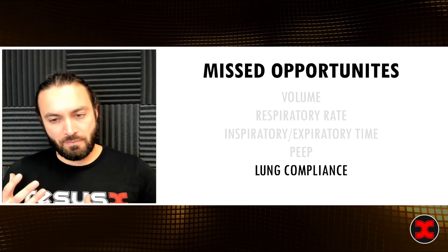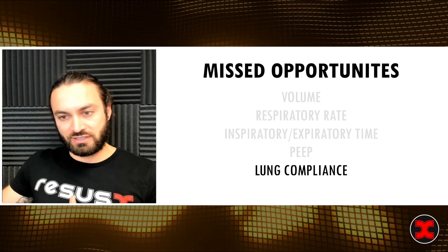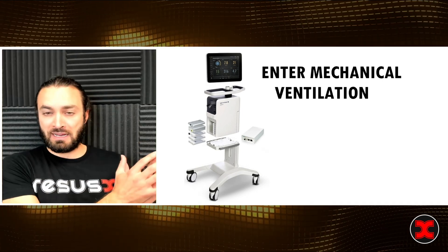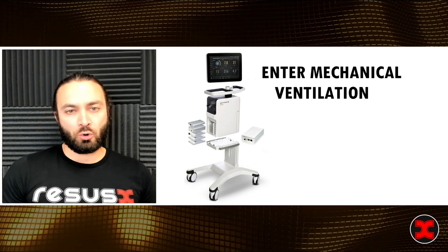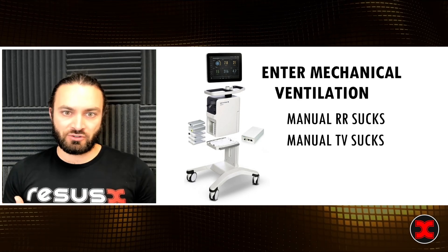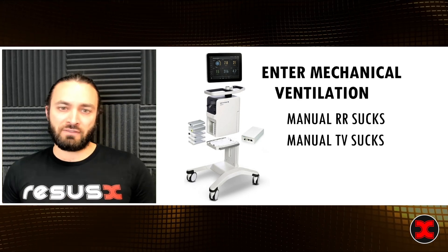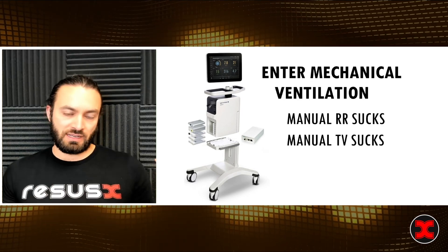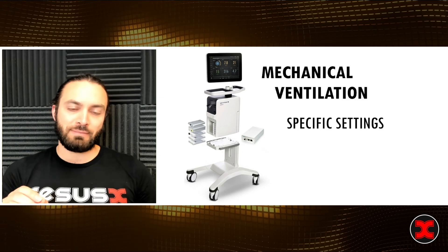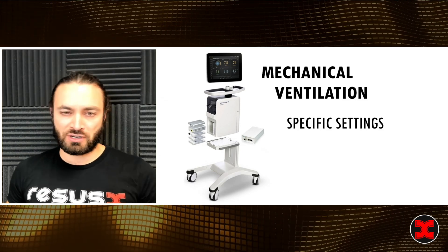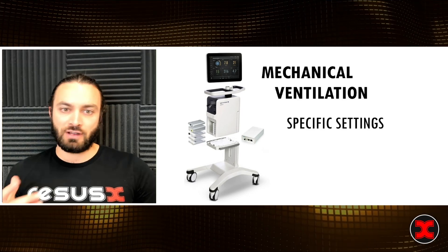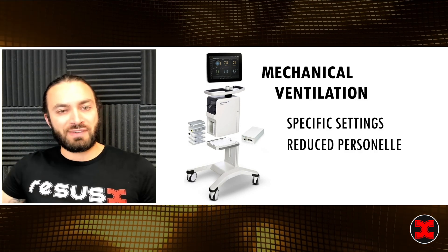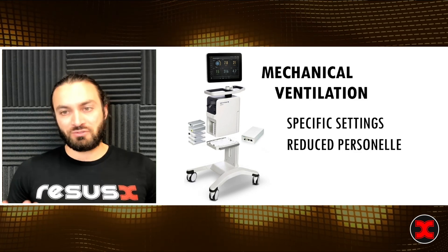We can determine lung compliance by how hard it is to bag, and we get all this information from the BVM itself. But we can take it a step further — enter mechanical ventilation. Data shows that when we try to target a respiratory rate or tidal volume by hand bagging, we're inevitably not very good at it. Our studies show we're all over the place in how we actually deliver ventilation. With a ventilator, I can make specific settings: a respiratory rate of 20, set it, and it doesn't change until I change my clinical decision making. It also frees up personnel — if RT was bagging, they can now assist elsewhere in the resuscitation.